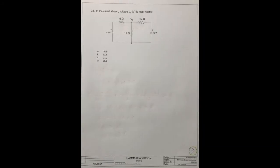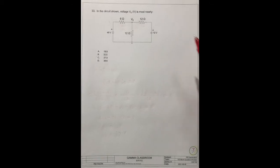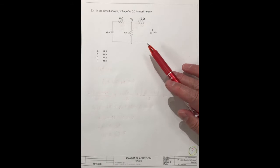Question number 33, in the circuit shown, voltage V0 is most nearly what number? There are four answers. When you see this circuit, you can use the Kirchhoff laws to solve this question.